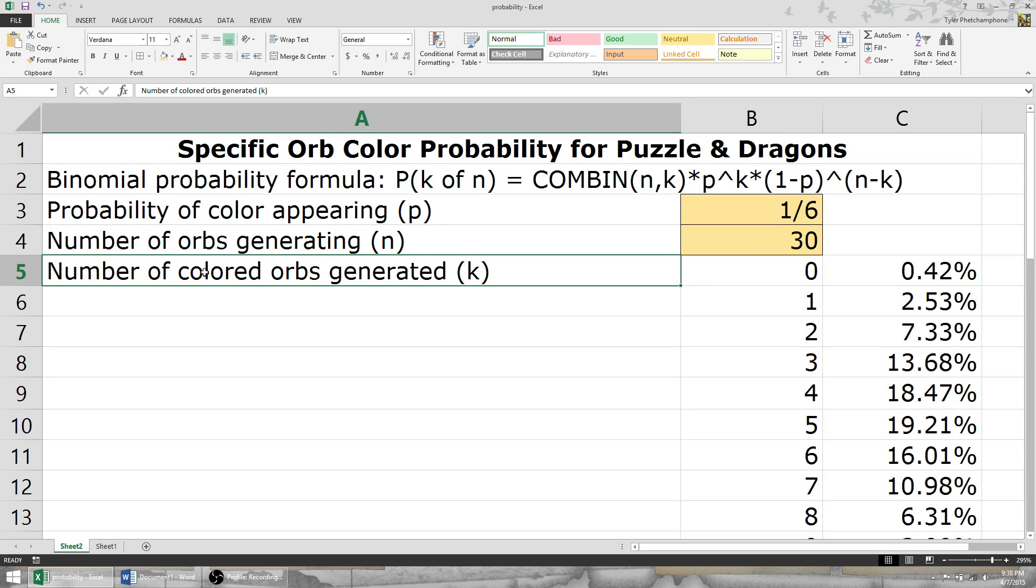And finally, the number of colored orbs generated. We're looking for yellow orbs, so it's going to be the number of yellow orbs generated, which is represented by k.